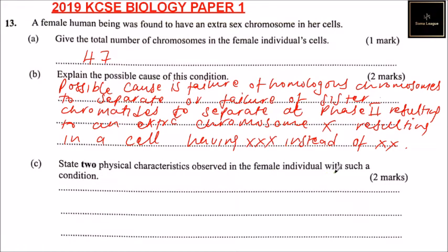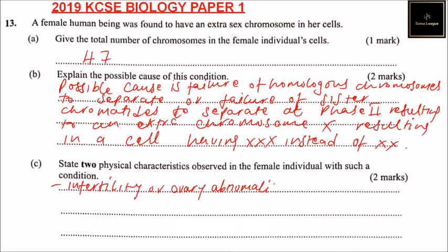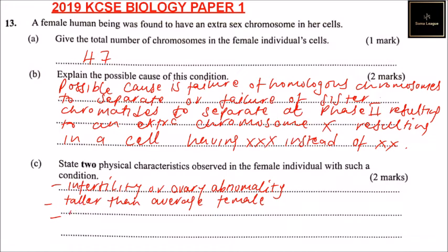Now state the physical characteristics observed in the female individual with such a condition. One of them is infertility or ovary abnormality. Another one is that the female may be taller than average. Another one is developmental delays.